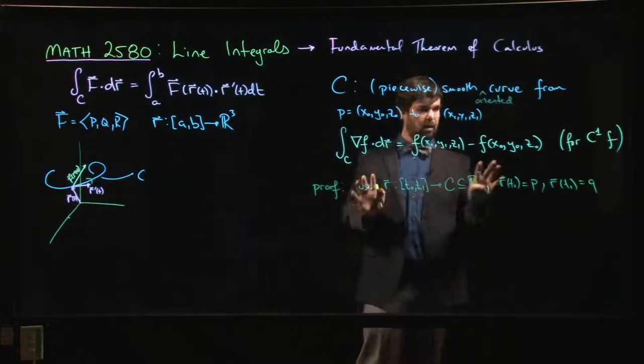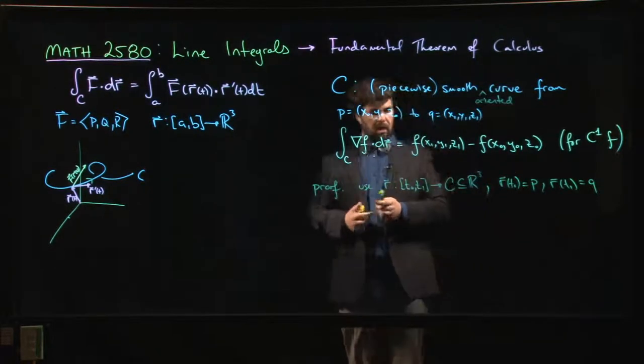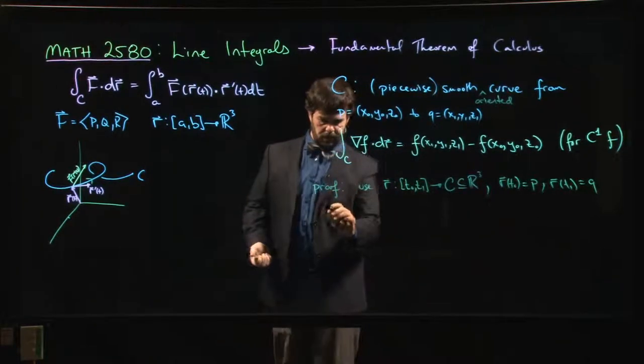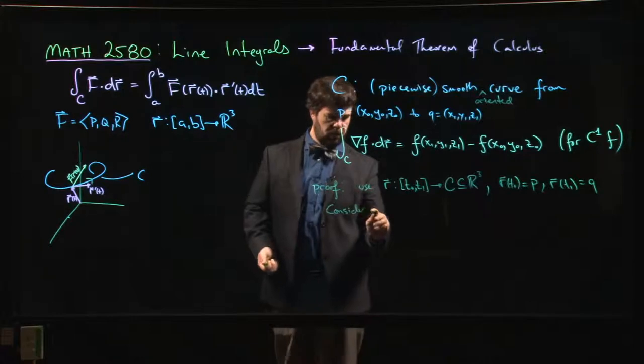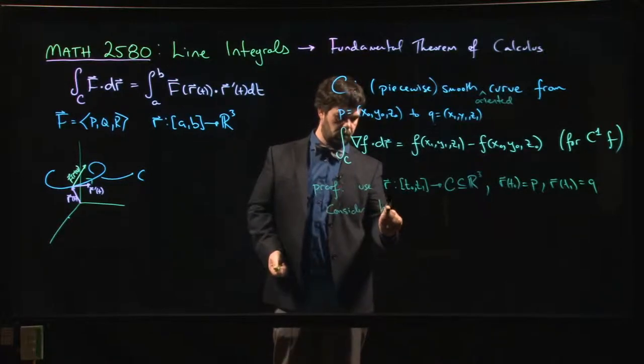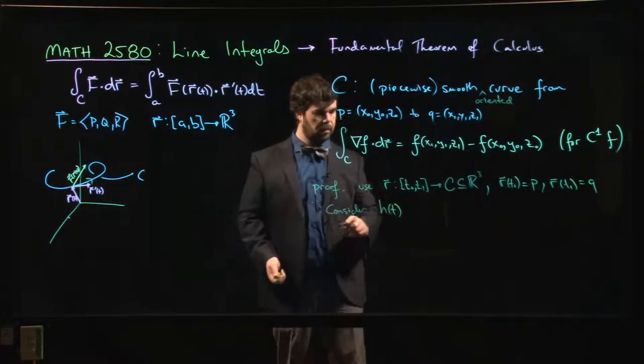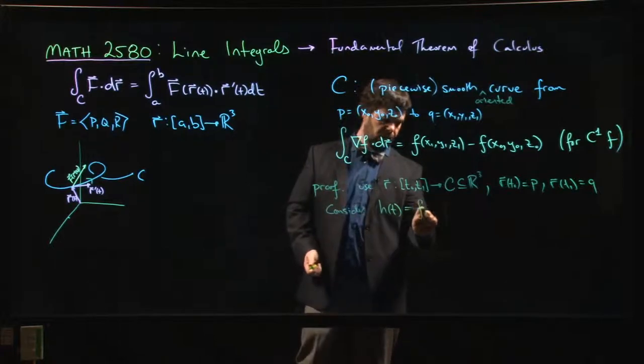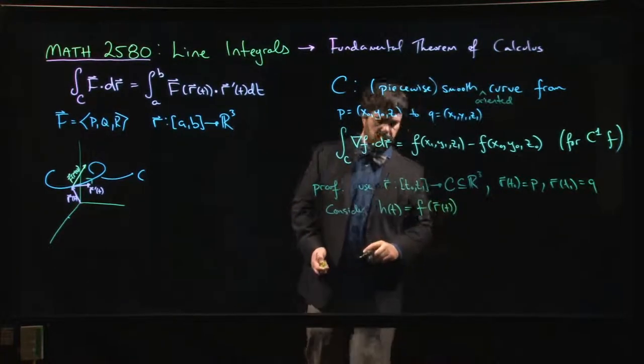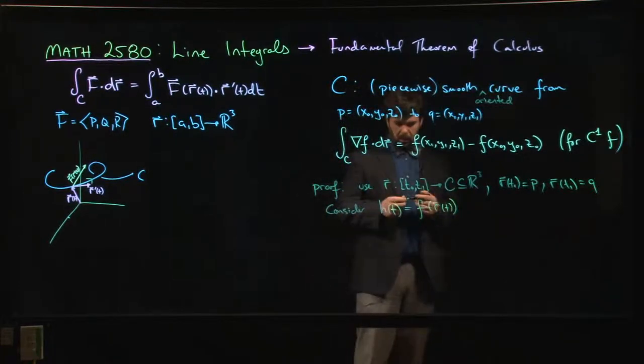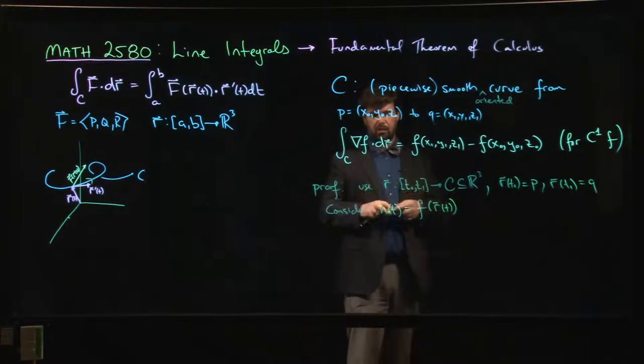So everything is C^1 and that means that you could consider the function h of t given by f of r of t. So that's a function from R to R - it's a real valued function of one variable.